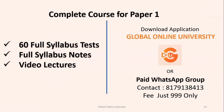Apart from this, we also have a complete course for paper 1, which consists of 60 full syllabus tests, 60 full syllabus notes, and video lectures. We have the facility at Global Online University where you can download an application. We have our paid WhatsApp group — the contact details are reflecting on the screen, and the fees are CMS triple nine. We have also started a new WhatsApp group from 12th of April, so aspirants who are keen about preparation can get in touch with the given number.